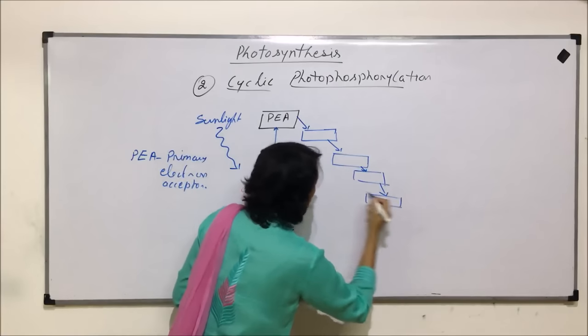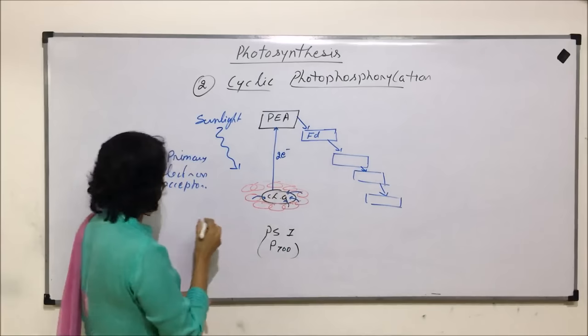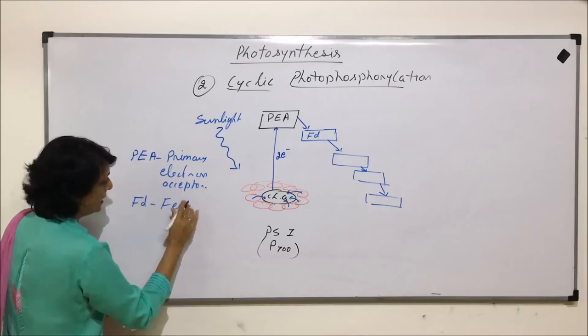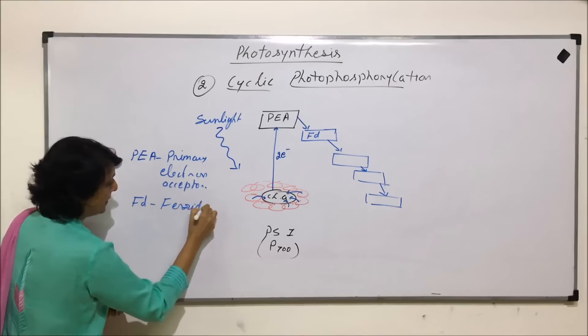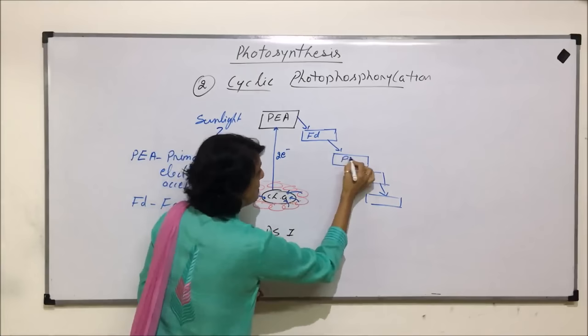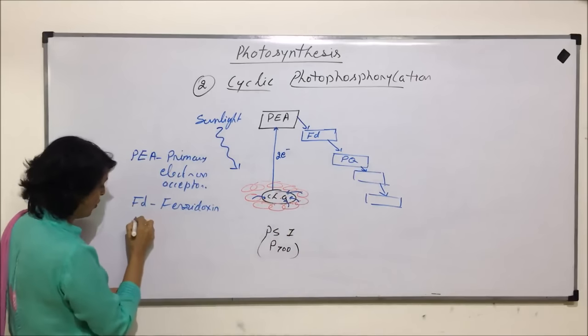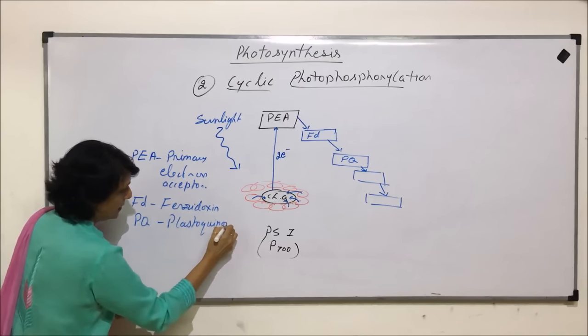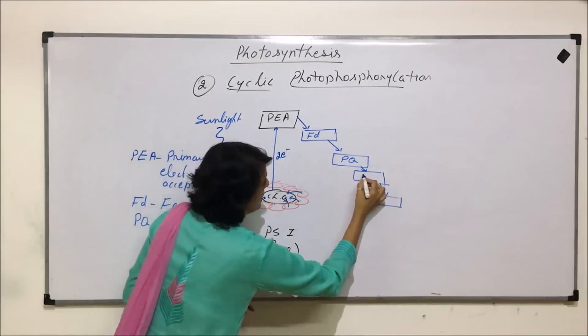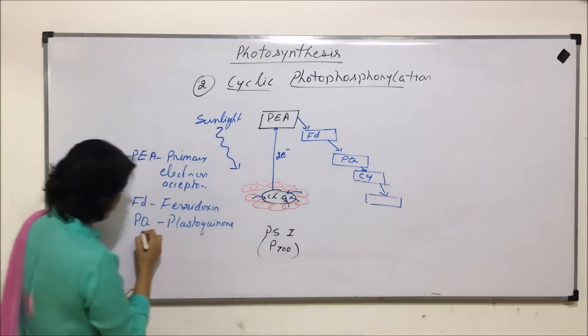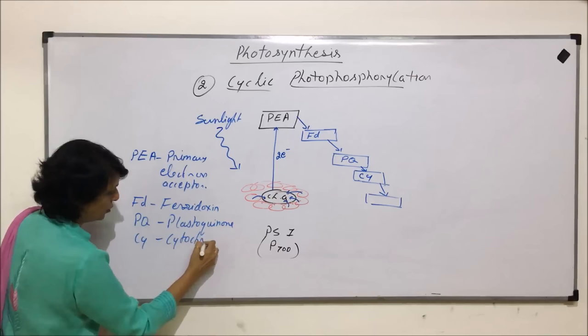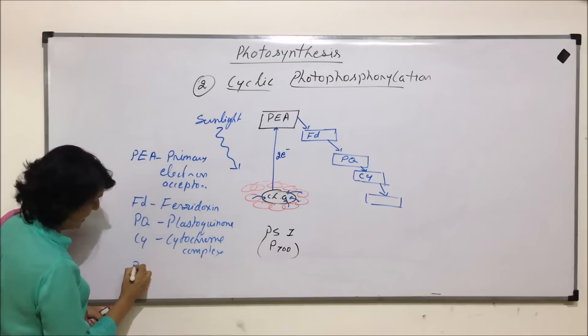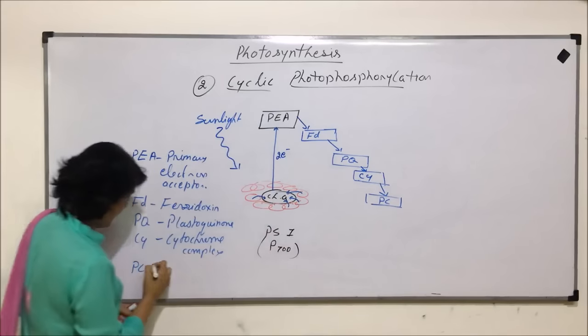And from here, the electron, so let us write down their names. There are four electron acceptors. The first one is ferredoxin, FD stands for ferredoxin, then is PQ, that is plastoquinone. And next is cytochrome complex, CY is cytochrome complex. And the last one is PC, that is plastocyanin.